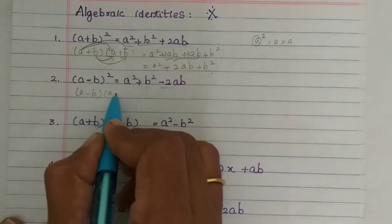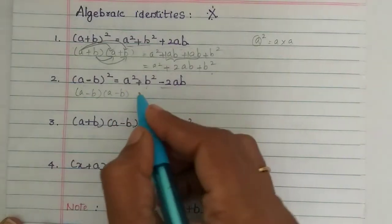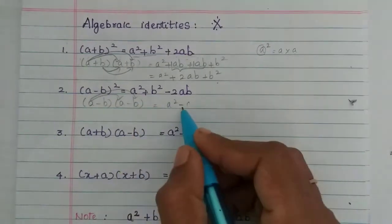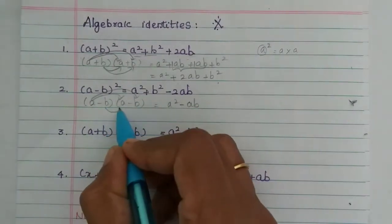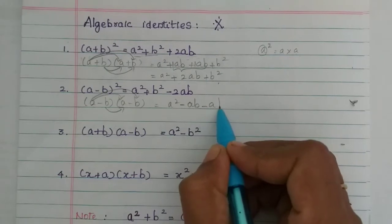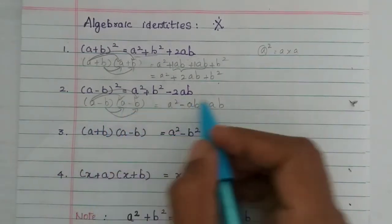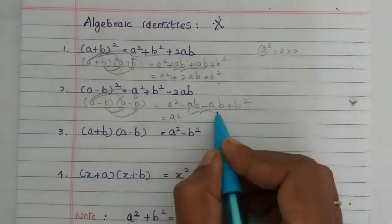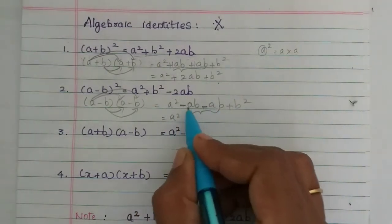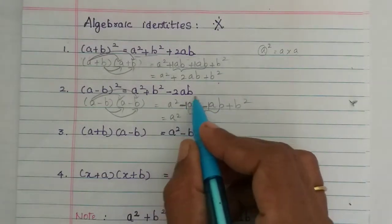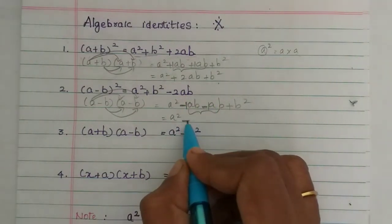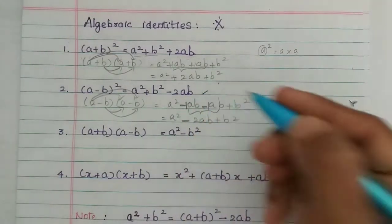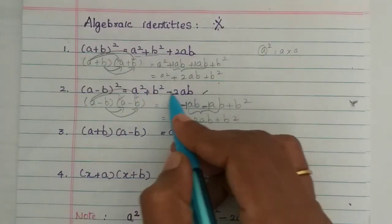A minus b, we multiply it two times. Now: a into a is a squared. Then a into minus b is minus ab. Then minus b into a is minus ab. Then minus b into minus b — minus times minus is plus — so plus b squared. Now we have two like terms with the minus symbol, so the coefficient gives minus 2ab. So this is a squared plus b squared minus 2ab.